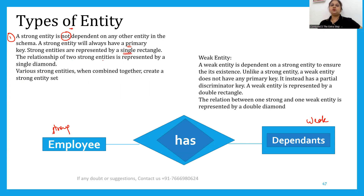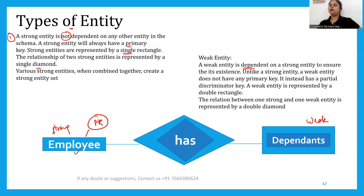The relationship between two strong entities is represented by a single diamond. If you have a weak entity, it will be dependent on a strong entity to ensure its existence, like grandparents who are very old and dependent on others.